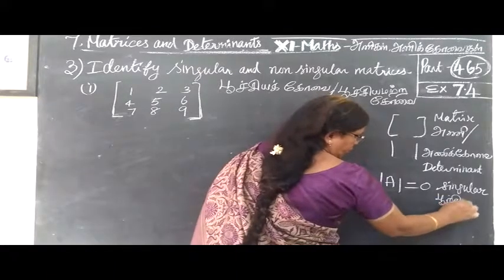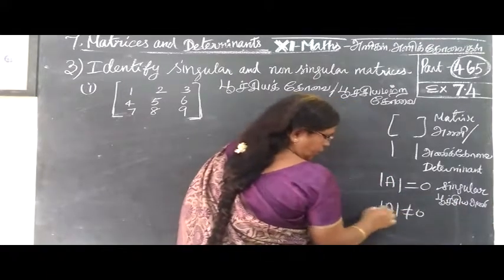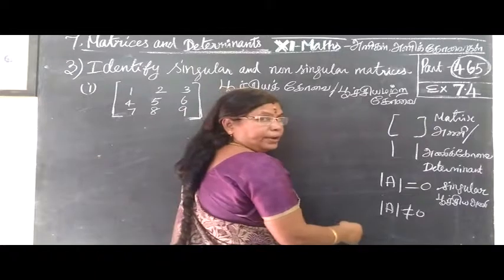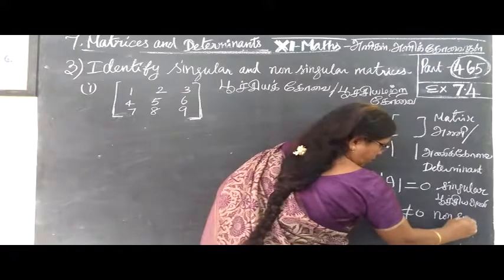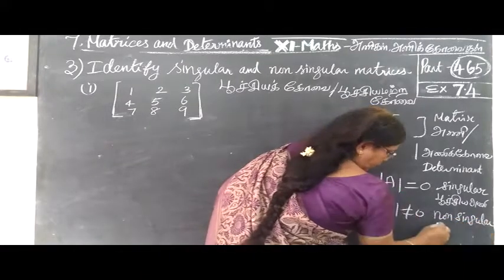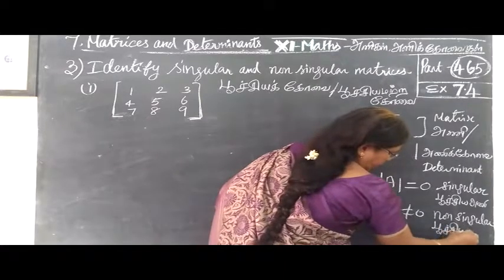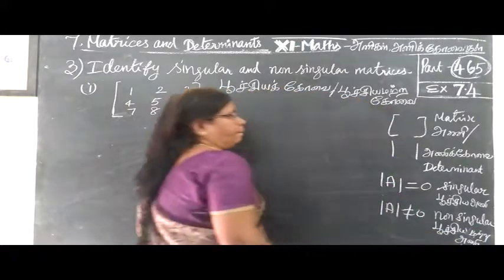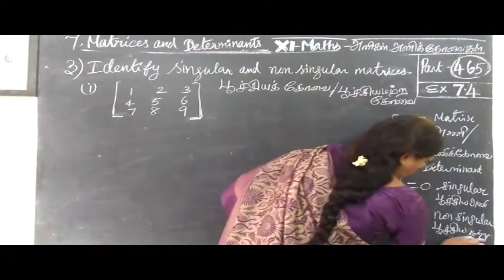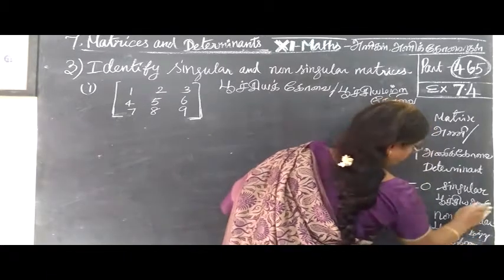If the determinant value is not equal to zero, in the determinant value, not equal to zero — this is non-singular. Non-singular means the determinant of A is not equal to zero.